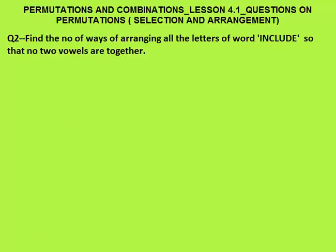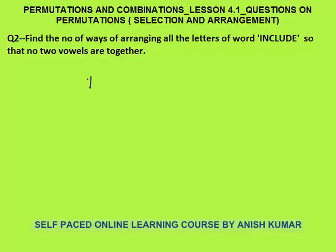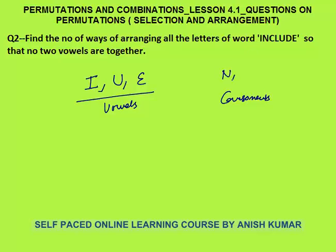Second question: find the number of ways of arranging all the letters of the word INCLUDE such that no 2 vowels are together. How many vowels do we have? I, U, and E — these 3 are vowels. The consonants are N, C, L, and D — these 4 are consonants. No 2 vowels must be together, meaning neither 2 nor 3 vowels can be adjacent. So first I will arrange the consonants.